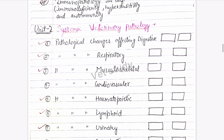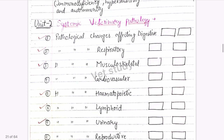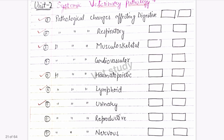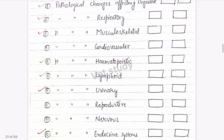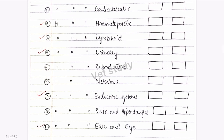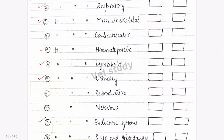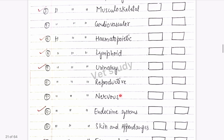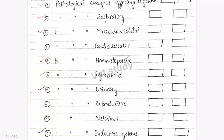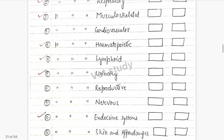Unit 2 is Systemic Veterinary Pathology, covered system-wise. The major portions to learn in detail are digestive and respiratory systems. Hematopoietics — you can be asked about anemia, regenerative anemia in particular. Also uremia and endocrine system pathology. The nervous system has very few questions.